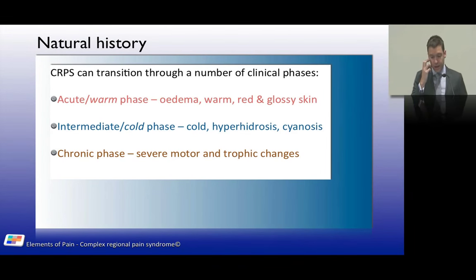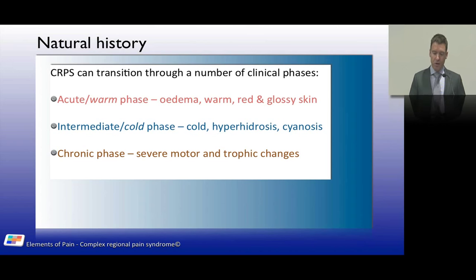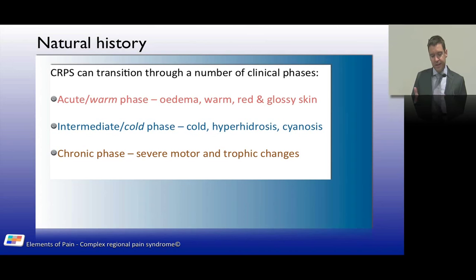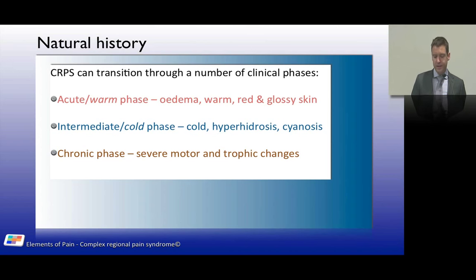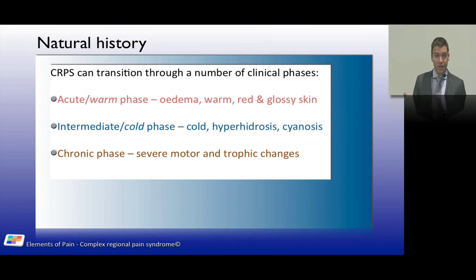The natural history of CRPS can involve three phases: an acute phase, an intermediate phase, and a chronic phase. The acute phase is a warm phase — edematous, vasodilated, swollen, glossy, and red. The intermediate phase is the cold phase — blue and cyanotic. The chronic phase involves motor and trophic changes. Not everyone displays all phases, and transitions can occur quickly or slowly.